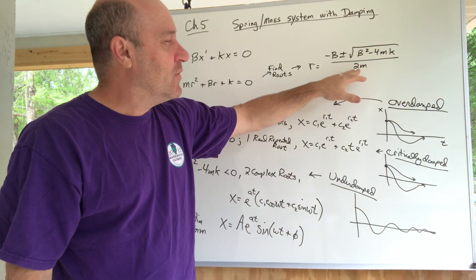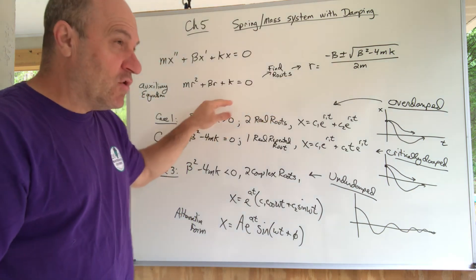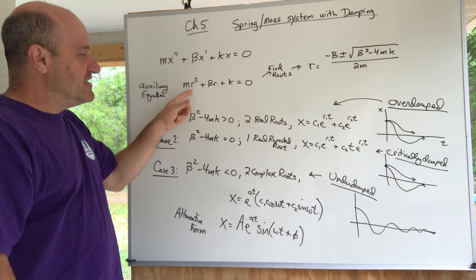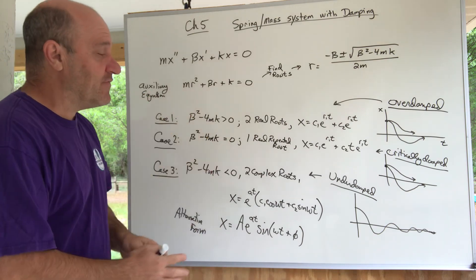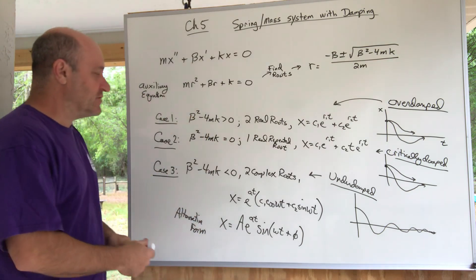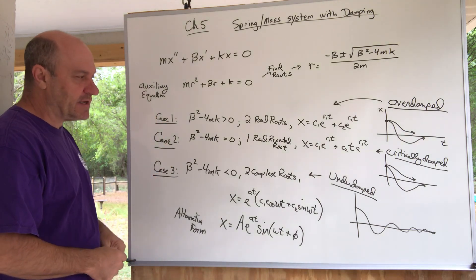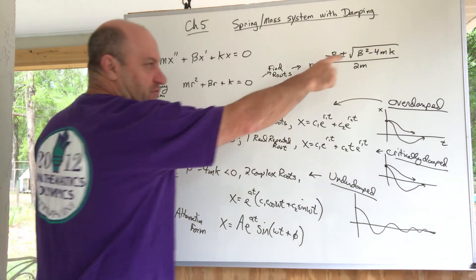This is the quadratic formula. A second-order, second-degree quadratic equation could have different types of answers, so I've got three cases here: case one, case two, and case three.